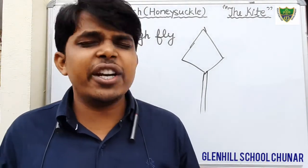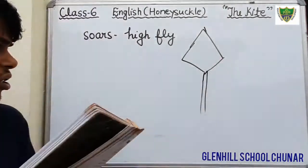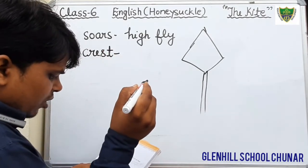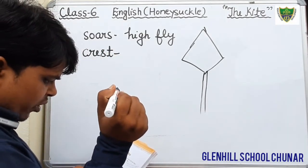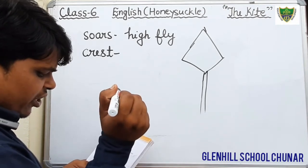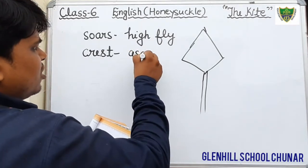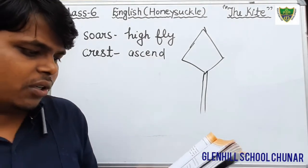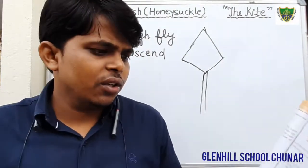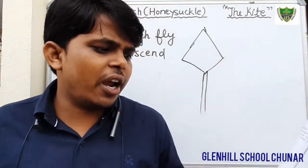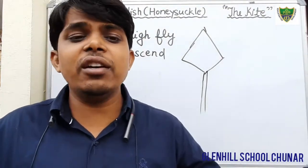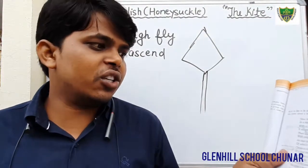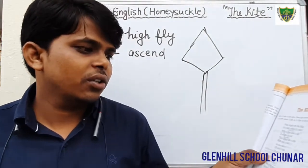Climb to the crest — 'crest' means ascent, height. C-R-E-S-T. When the kite flies in the sky, it touches the highest peak — the crest. Gust means a sudden, strong rush of wind. When a sudden strong wind comes, it pulls the kite and it touches the highest crest.